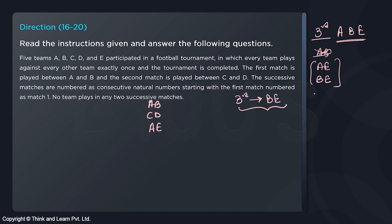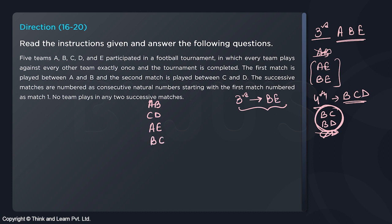Similarly, the fourth match — C and D cannot play again, so it must be B,C or B,D. And importantly, C and D have behaved in exactly the same way so far: the second match was C vs D, and no one else has mentioned C or D. So C and D can be interchanged. I'll take the fourth match as B,C, keeping in mind B,D is a symmetric counterpart. So the fourth match is B,C.